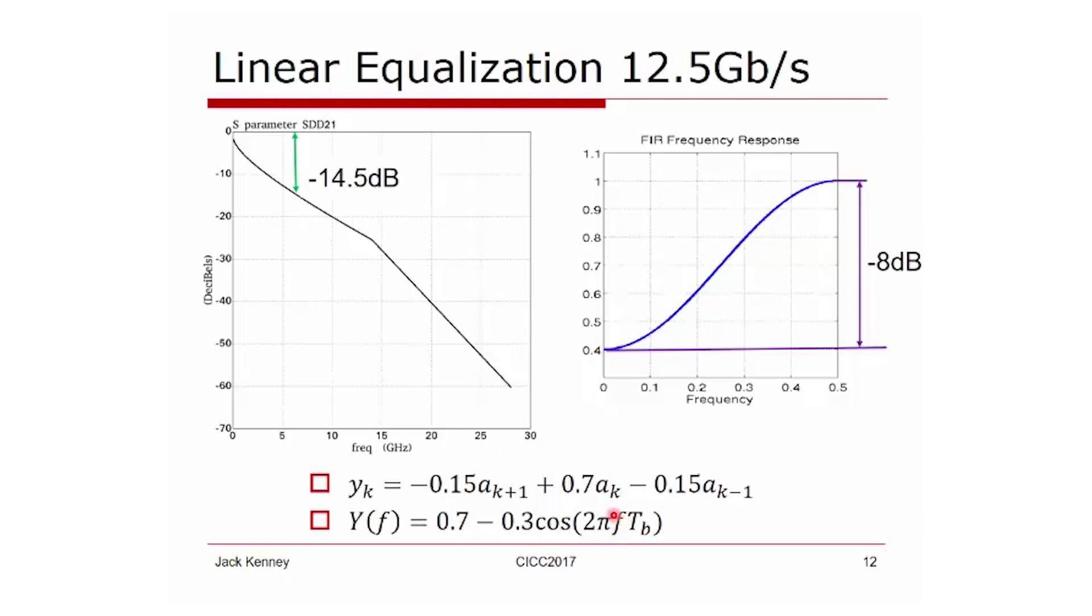Let's plug in a couple of frequencies. At a frequency of zero, if you evaluate the cosine of zero, it's one. So 0.7 minus 0.3, you get a gain of 0.4 here.